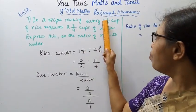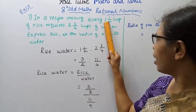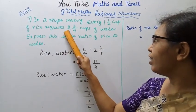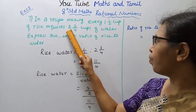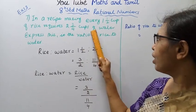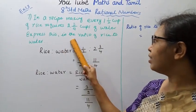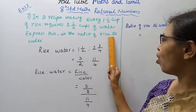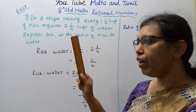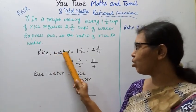In the recipe, making every 1 and 1/2 cups of rice requires 2 and 3/4 cups of water. Express this in the ratio of rice to water.